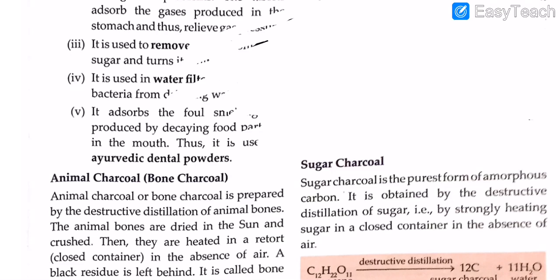Quick revision of animal charcoal uses: decolorizing agent (removes brown color from cane sugar), ivory black as black pigment in paintings, filters aquarium water, prevents dental fluorosis by removing excess fluoride, and used in manufacturing phosphorus compounds.